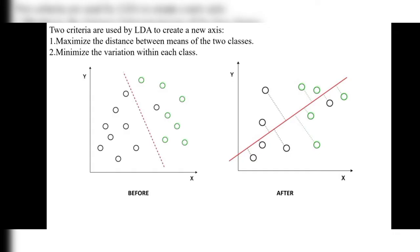After using Linear Discriminant Analysis, a red line is formed — a continuous red line — and the two classes are now separated. Two criteria are used by LDA to create a new axis: first, maximize the difference between the means of the two classes; second, minimize the variation within each class. After finding the mean, it will minimize the variation of each class. Simply, LDA maintains the difference between the two classes and separates them.